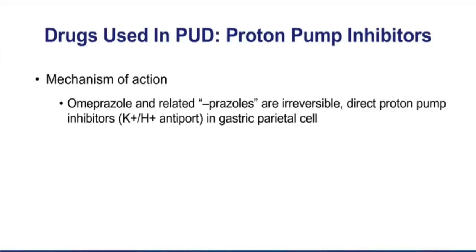When we think about proton pump inhibitors, we're aware of how popular these drugs are today. Drugs like omeprazole and other -prazoles — notice the common ending for these drug names — they're actually irreversible inhibitors. Because they're binding irreversibly to the proton pump, they're certainly going to have a long-lasting effect. Most people can take -prazoles once a day, compared to histamine H2 blockers, which are taken two to four times a day. So it's certainly much more convenient dosing with a PPI.